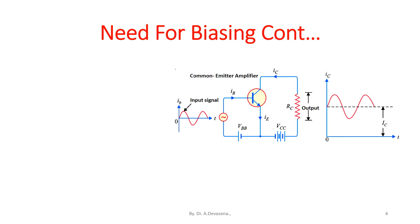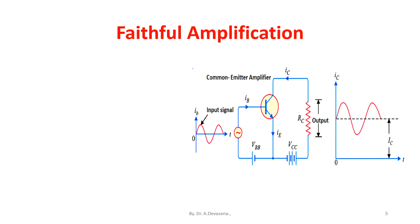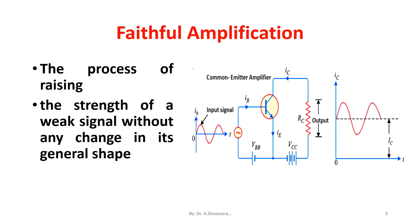In transistor amplifier circuits, the output signal power is always greater than the input signal power. The process of raising the strength of a weak signal without any change in its general shape is known as faithful amplification.